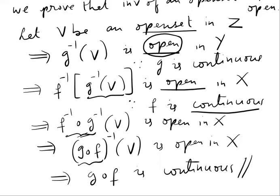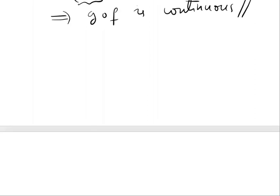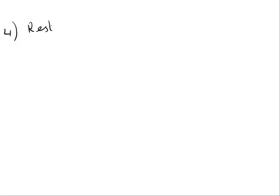Now we shall go to the next one, that is to prove that restriction maps are continuous. That is the fourth property. Fourth property: restriction maps are continuous.